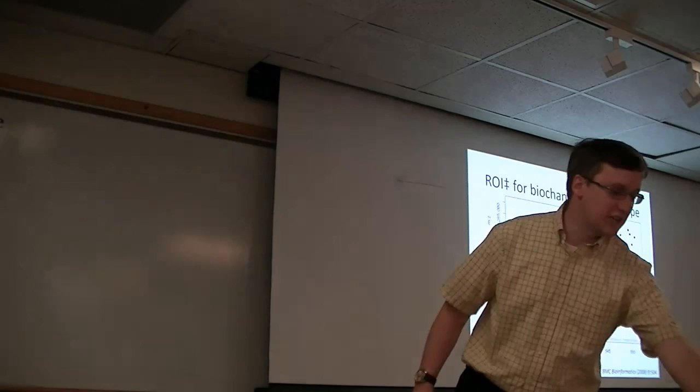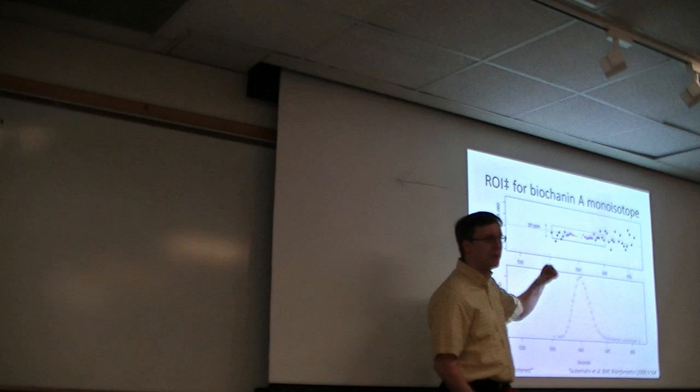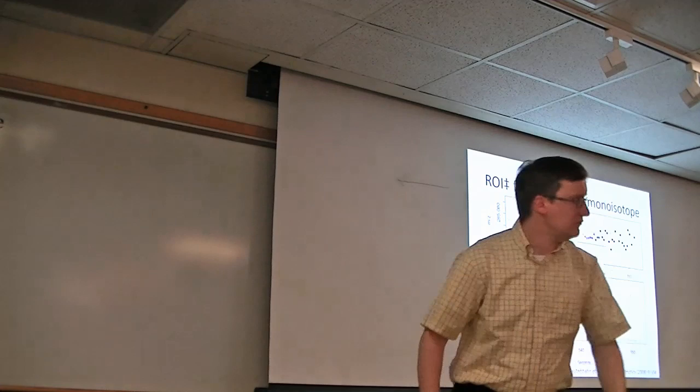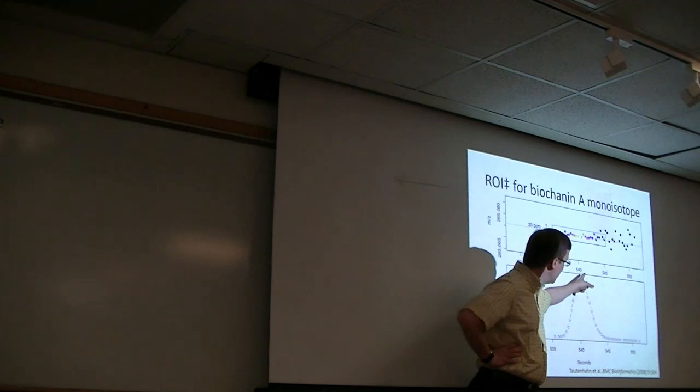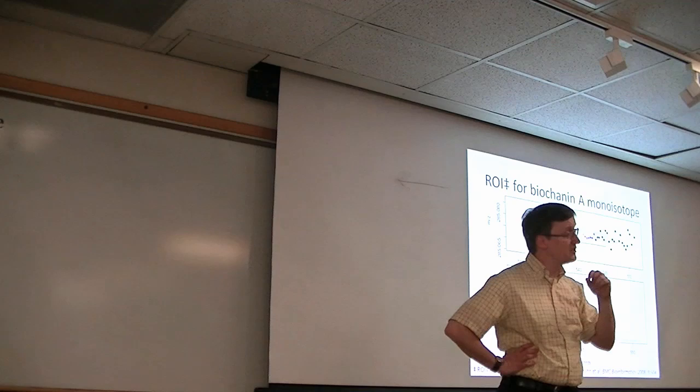What do these data look like when we start digging into them? We see that we have a box that we've drawn in two dimensions. We've got our mass-to-charge dimension that's listed here as 20 ppm wide. And we have a retention time box that, in this case, is something like 10 seconds wide. That box defines the feature space that this is falling in. We see that, at first, we have very little intensity for it. It rises rapidly, and then it tails off a little bit. That's our nice chromatographic peak shape.